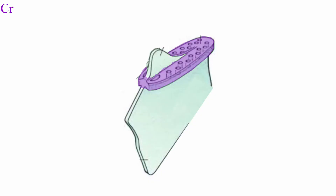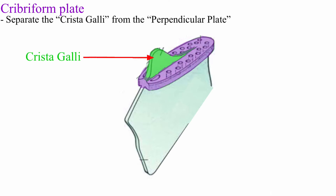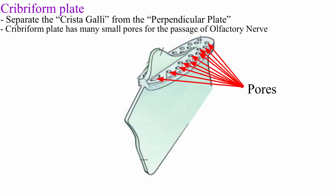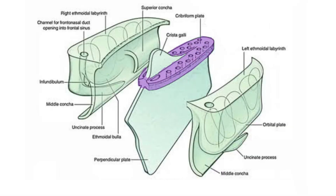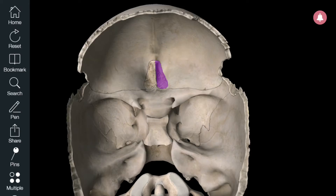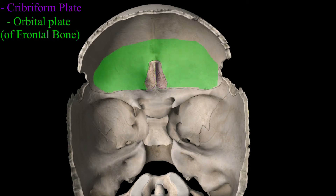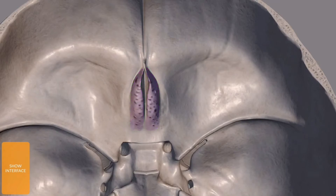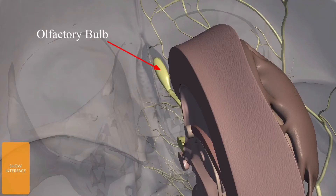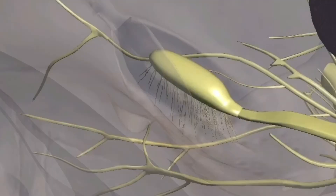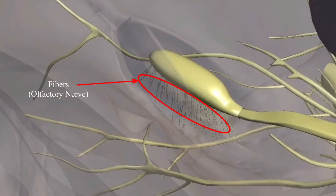Next is the cribriform plate. The cribriform plate is the plate that separates the crista gallii from the perpendicular plate. The cribriform plate has many pores in it that allow the passage of the olfactory nerve. Through the cribriform plate, the left and right labyrinth are attached to the median vertical plate. The cribriform plate is attached laterally to the orbital plate of the frontal bone. In this model, this is the cribriform plate, and over the cribriform plate the olfactory bulb is present. As you can see, through the pores of the cribriform plate, the fibers of the olfactory nerve pass.